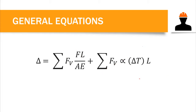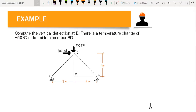The procedure is the same as for beams: we need to draw the virtual system and analyze the structure. Now let's go directly to an example. We have a truss structure where we are asked to compute the vertical deflection at B, and there is a temperature change of positive 50 degrees Celsius in the middle member BD. Since we are asked for vertical deflection, in our virtual system we will use a one-unit vertical load at point B. We must take note of this temperature change because it can also affect the deflection at that point.